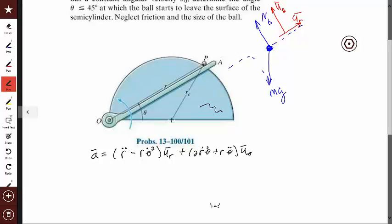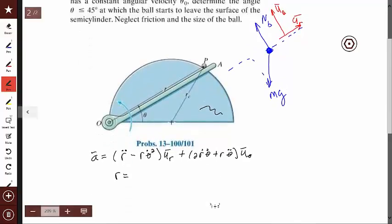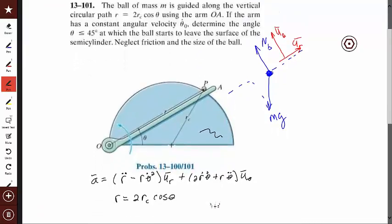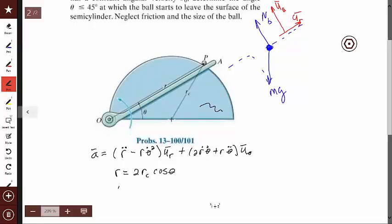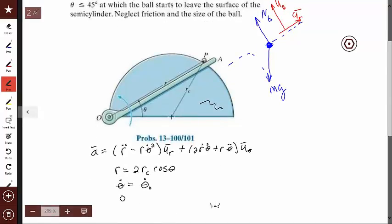Now let's put in the things that I know. I know that R is equal to 2 Rc cosine theta. Rc is constant, cosine of theta. So that's what I have there. So here it says that theta dot is a constant, theta zero dot. So this thing is known, theta zero dot is known. Because it's constant, theta double dot is equal to zero.